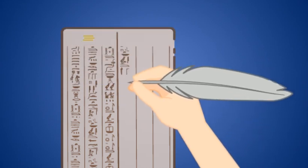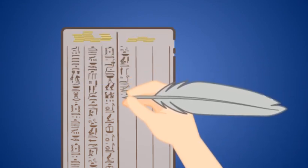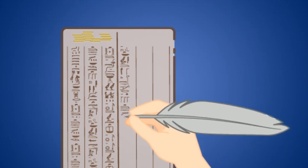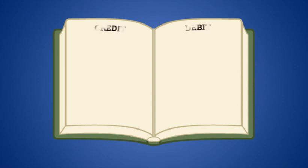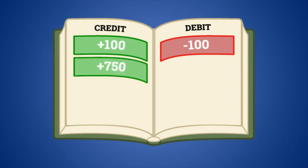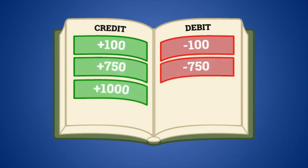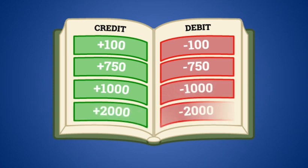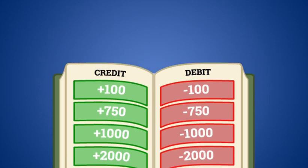The first accounting records date back to roughly 5,000 years ago and they were single-entry, which is to say that they kept records of receivables and payables in two separate columns. In the 1500s, double-entry accounting was introduced, which consisted of recording transactions on the books of each counterparty — one on credit and the other on debit. Double-entry registers are still in use today in most commercial and financial activities; an example is a bank statement.